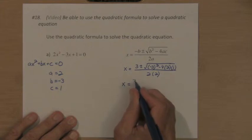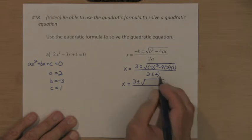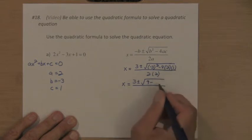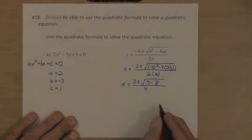First, what's under that square root, let's take care of that. So this is 3 plus or minus, negative 3 squared is 9, and it's minus four times 2 is 8, times 1 is 8, so it's 9 minus 8, and the bottom of that fraction is 4, two times 2.